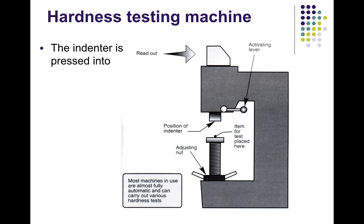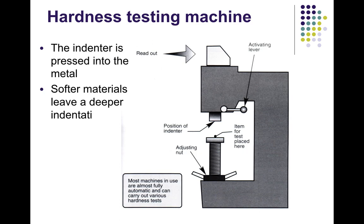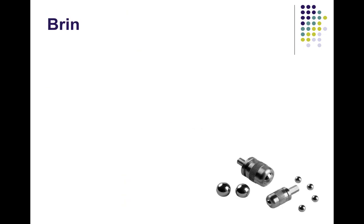As you can see, the indenter is pressed into the metal. Because the metal is softer and the indenter is harder, it leaves an indentation. We then measure the depth and surface area of the indentation to determine the hardness. If the material is harder, the indentation is smaller; if it is less hard, the indentation is larger.